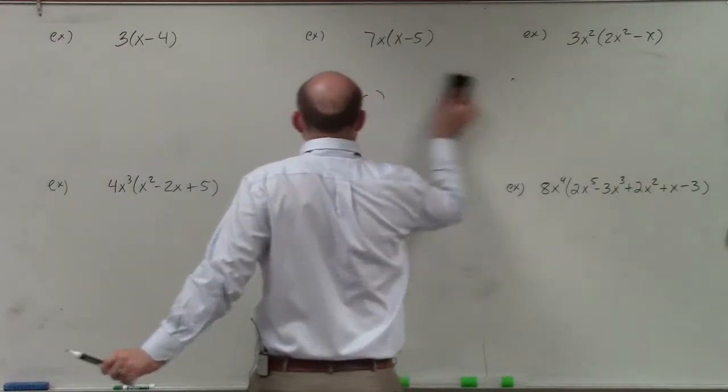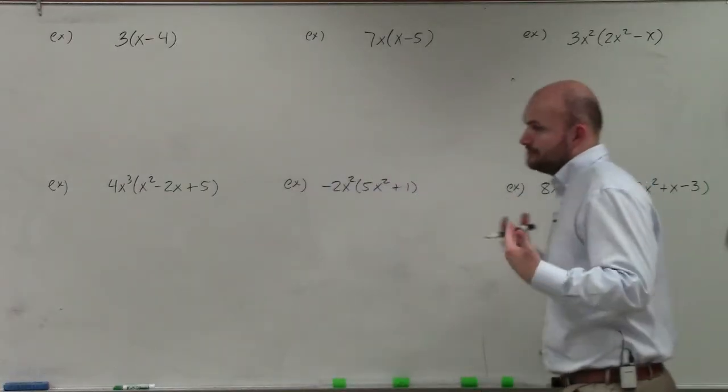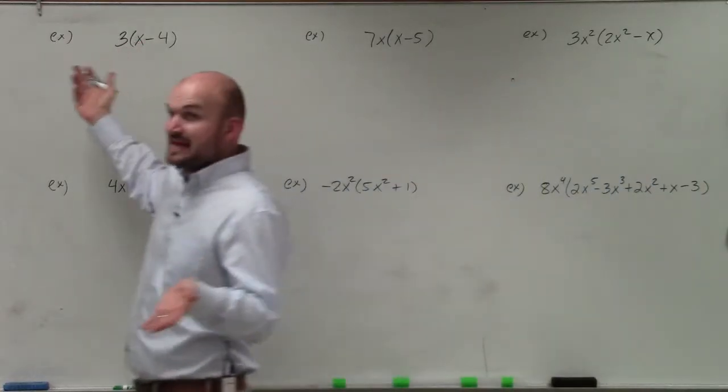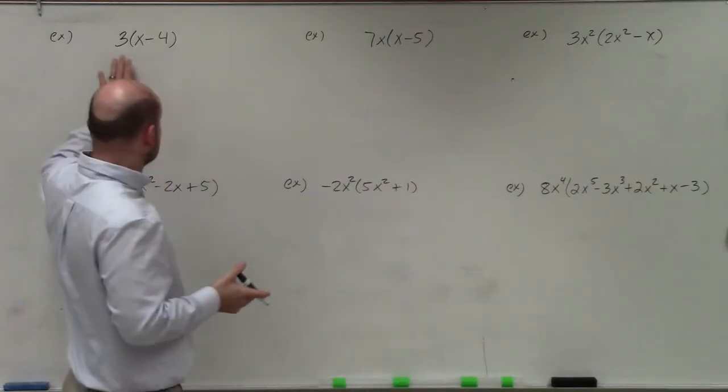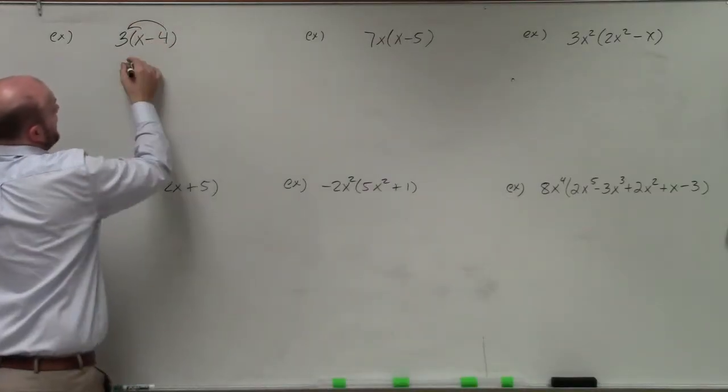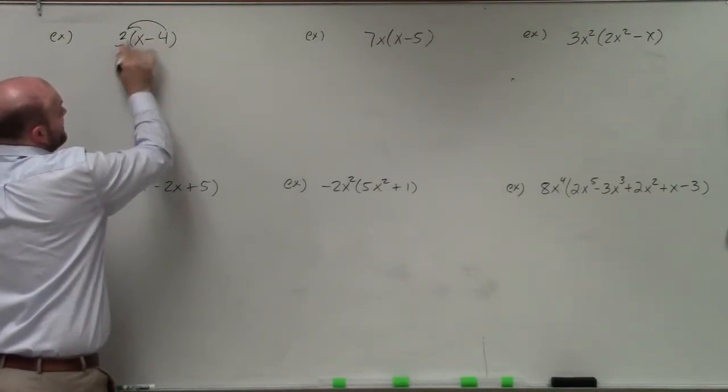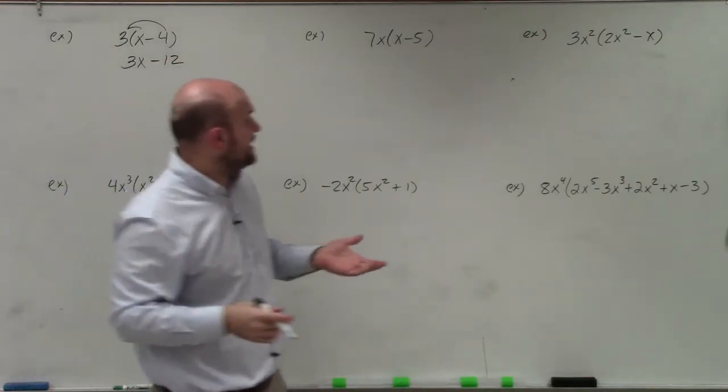But in the first example, it's pretty simple. I just have a number, and I chose a number because I wanted you to make sure you remember that 3 times x, well, we can't, those aren't really like terms, because this is a number and this is a variable, so we're just going to rewrite this as 3 times x, and then 3 times negative 4, that's going to give me a negative 12 as I multiply that out.